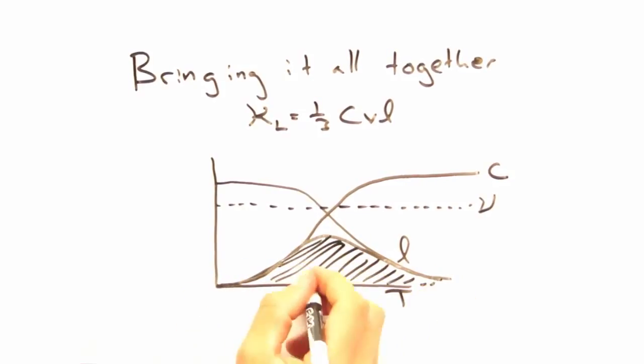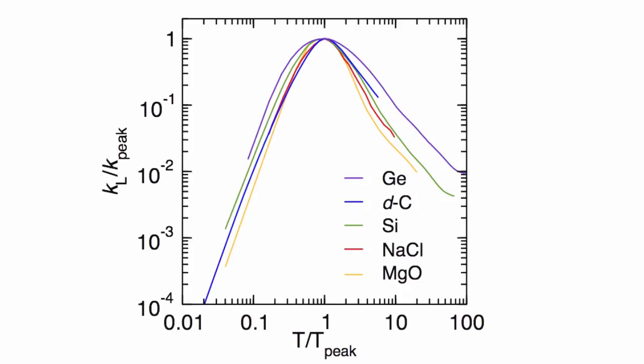This is all well and good, Eric, but how does this compare to real world materials? Yeah, so let's take a look at this figure. What you see here is that each material has a peak in thermal conductivity, just like we've generally predicted from the scattering theory discussion above.